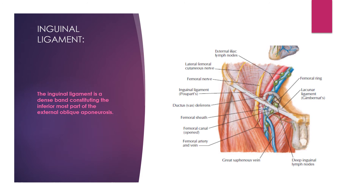The inguinal ligament is a dense band constituting the inferior-most part of the external oblique aponeurosis. It turns on itself inward to form the inguinal ligament, running from the anterior superior iliac spine to the pubic tubercle.